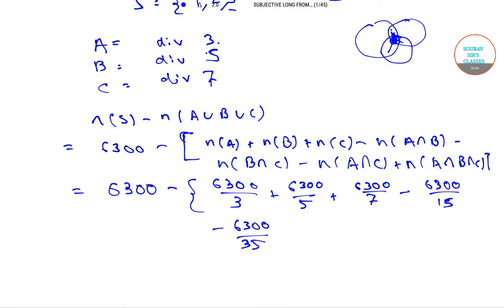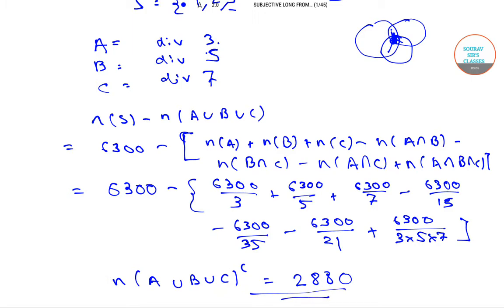Minus 6300 divided by 21, that is 3 into 7, plus 6300 divided by 3 into 5 into 7, which will give our answer. That is N of A union B union C complement, which equals 2880, and this is our answer.